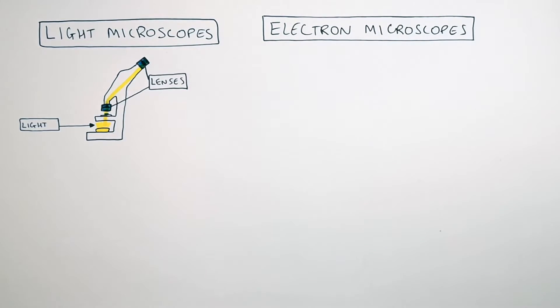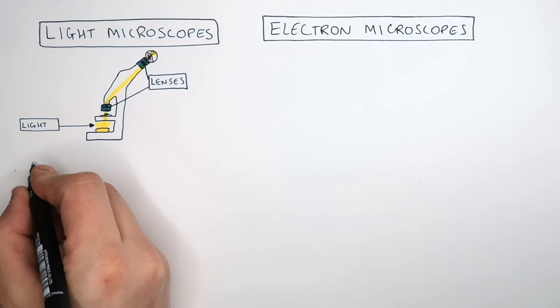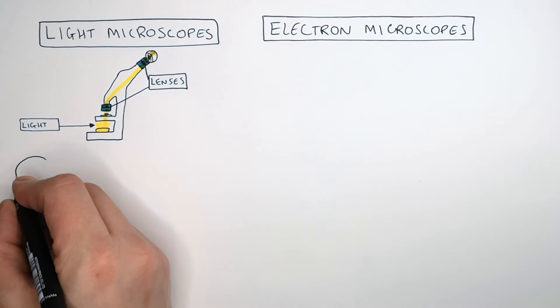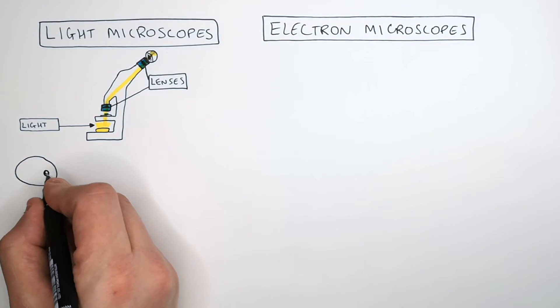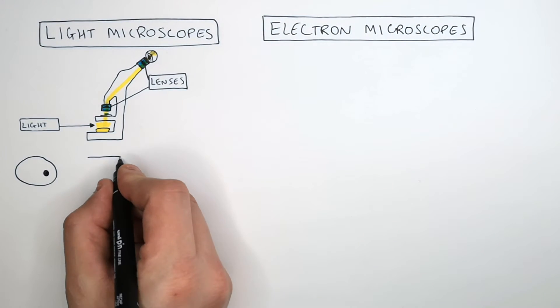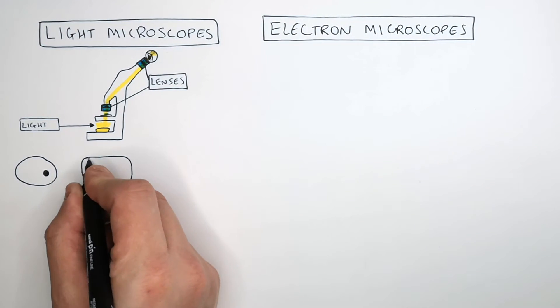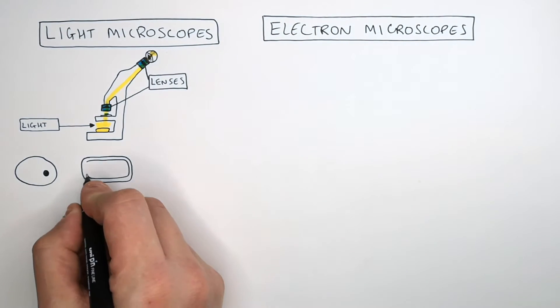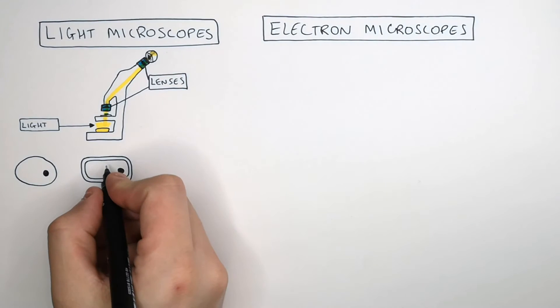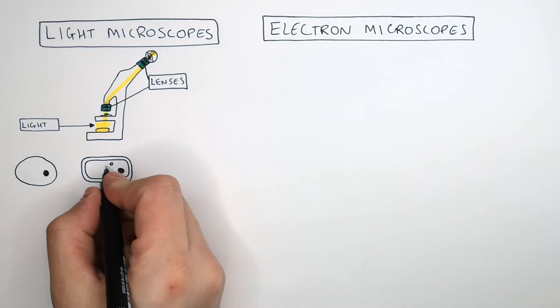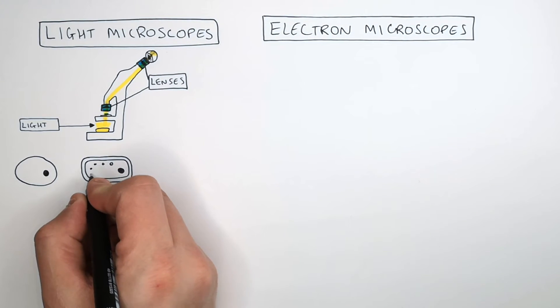Light microscopes can be used to visualise cells and identify the larger structures within the cells. These include the nucleus and chloroplast, for example.